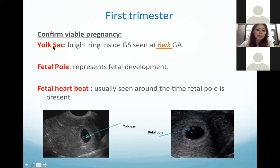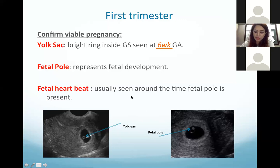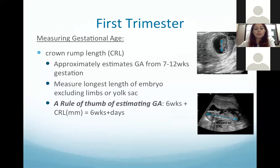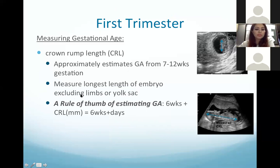To confirm viable pregnancy we need to see a yolk sac — a bright ring inside the gestational sac — and the fetal pole, which represents fetal development, with fetal heart activity seen as a flicker. The crown-rump length is measured from the head to the buttock, approximately estimating gestational age from 7 to 12 weeks, measuring the length of the embryo excluding limbs and yolk sac.